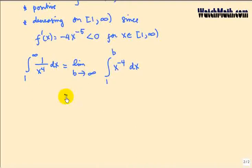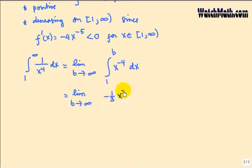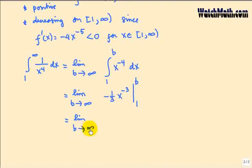This equals the limit as b goes to infinity. The integral of x to the negative 4 is negative 1/3 x to the negative 3, evaluated from 1 to b. Plugging in, we get the limit as b goes to infinity of negative 1 over 3b³, plus 1/3.